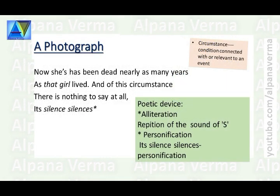In the last lines, the poet says: 'Now she has been dead nearly as many years as that girl lived.' That girl refers to the poet's mother. Her mother died, and the girl in the photograph seems like a different person altogether. She died leaving behind memories. 'This circumstance' refers to the loneliness and sense of loss the poet suffers in the absence of her mother.